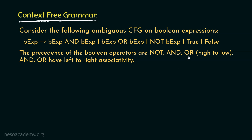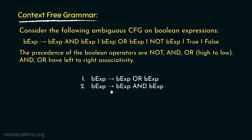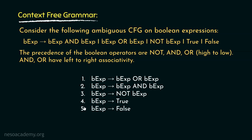The precedence of Boolean OR is the lowest, so the first rule would be: BEXP can be rewritten as BEXP or BEXP. The operator AND has the second highest precedence, so the second rule would be: BEXP can be rewritten as BEXP AND BEXP. The third rule will have the operator with the highest precedence, so it would be: BEXP can be rewritten as NOT BEXP. The fourth rule is BEXP → TRUE and the fifth is BEXP → FALSE.